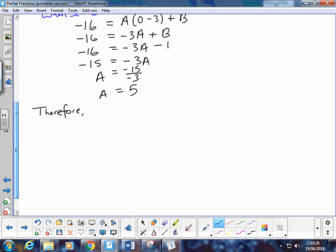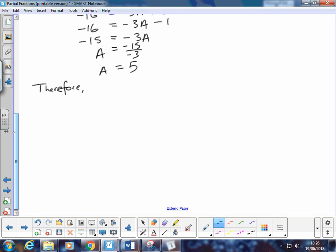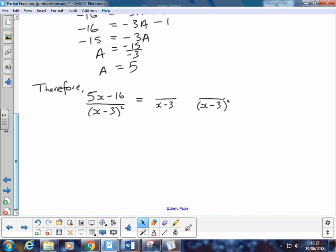Therefore, our original rational function, which was 5x minus 16 over (x - 3) squared, is going to be written as one fraction, A over (x - 3), (x - 3). Our second fraction is going to be divided by (x - 3) squared. Let's just remind ourselves, we found that A was 5. We found that B was negative 1.